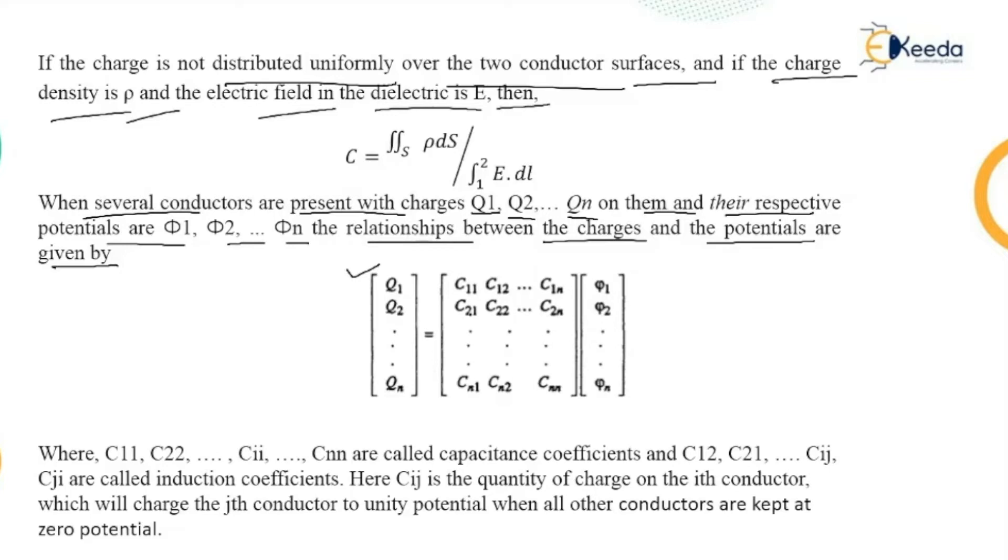and C₂₁, C₂₂ up to C₂ₙ, and so on up to Cₙ₁, Cₙ₂ up to Cₙₙ, multiplied by φ₁, φ₂ up to φₙ. C₁₁, C₂₂ up to Cᵢᵢ, Cₙₙ are called capacitance coefficients.